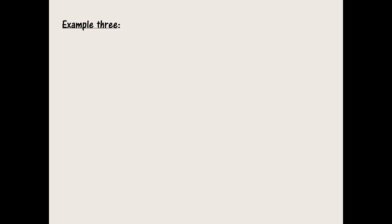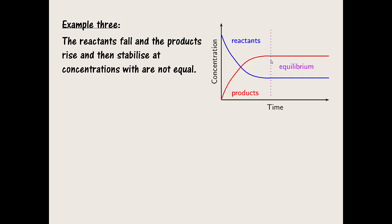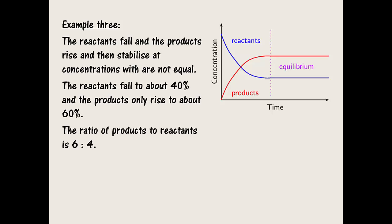Our third and final example. The relative amount of reactants falls lower than the relative amount of products when equilibrium is reached. This reaction has progressed far to completion, but not quite. In this reaction, the ratio of products to reactants would be 60-40 or 6-4. In other words, 3-2. The combustion of sulfur dioxide with oxygen gas is an equilibrium system that behaves like this.